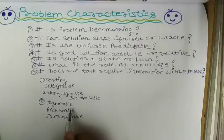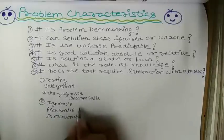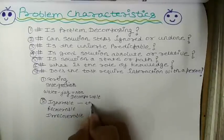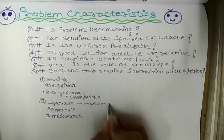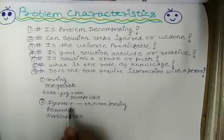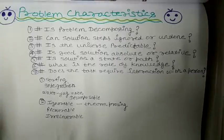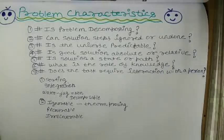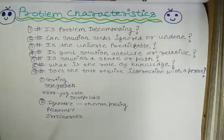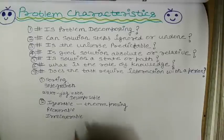The ignorable problems are problems which are used in theorem proving. These are problems in which we start from the initial point. If we don't get a solution, we start from the initial point again. So, we can ignore those steps. Solutions can be ignored, and we will start again from the initial point to get the solution.